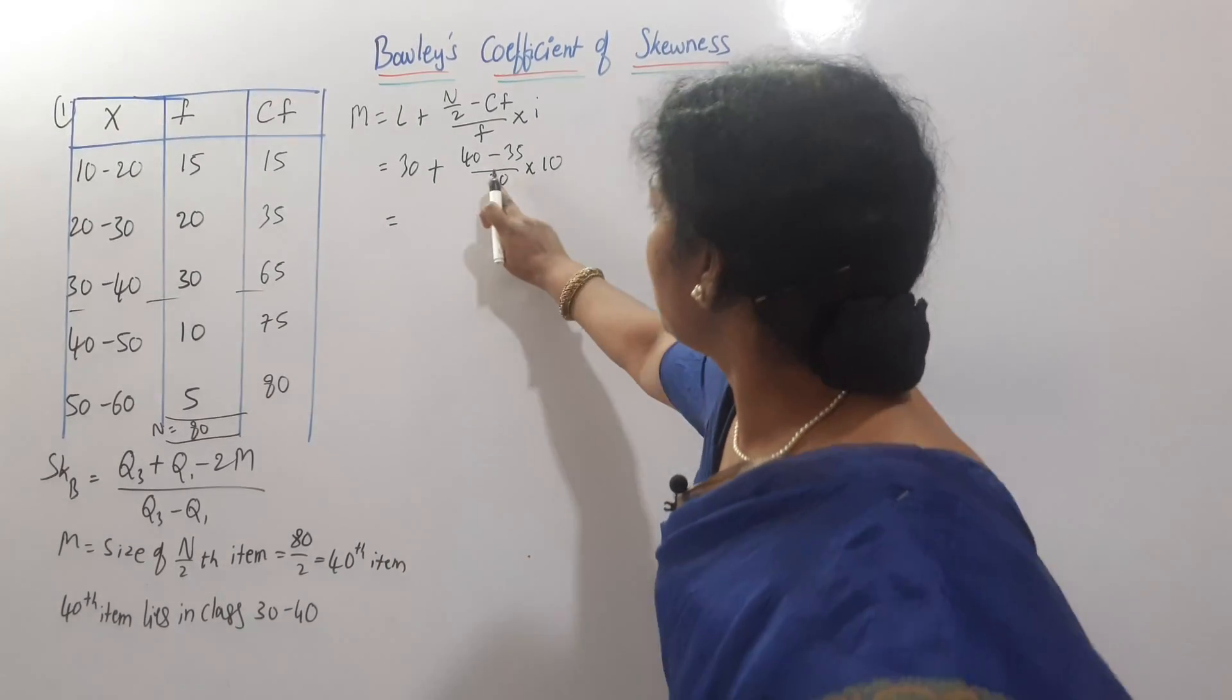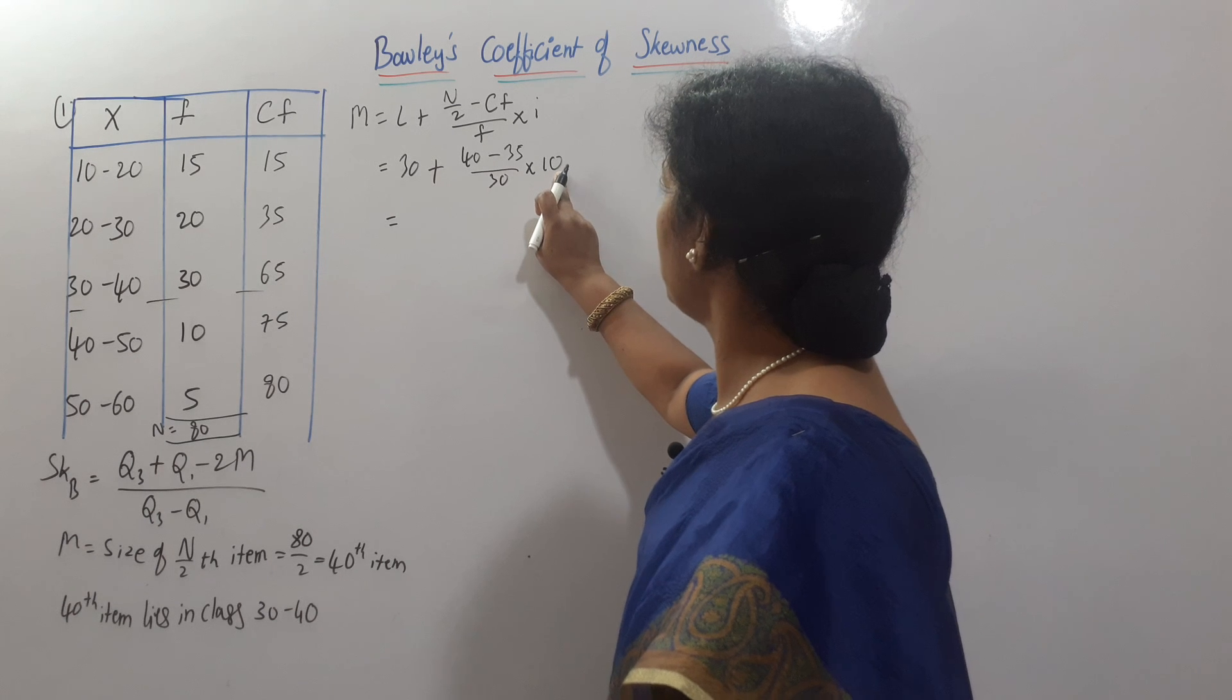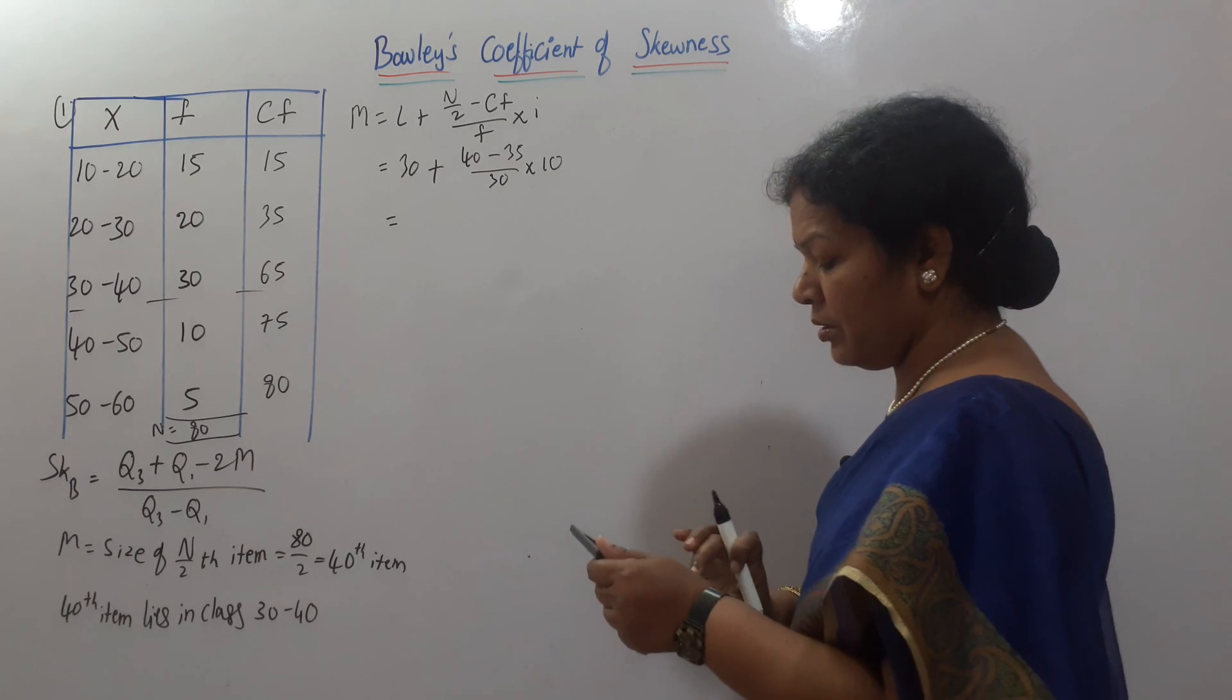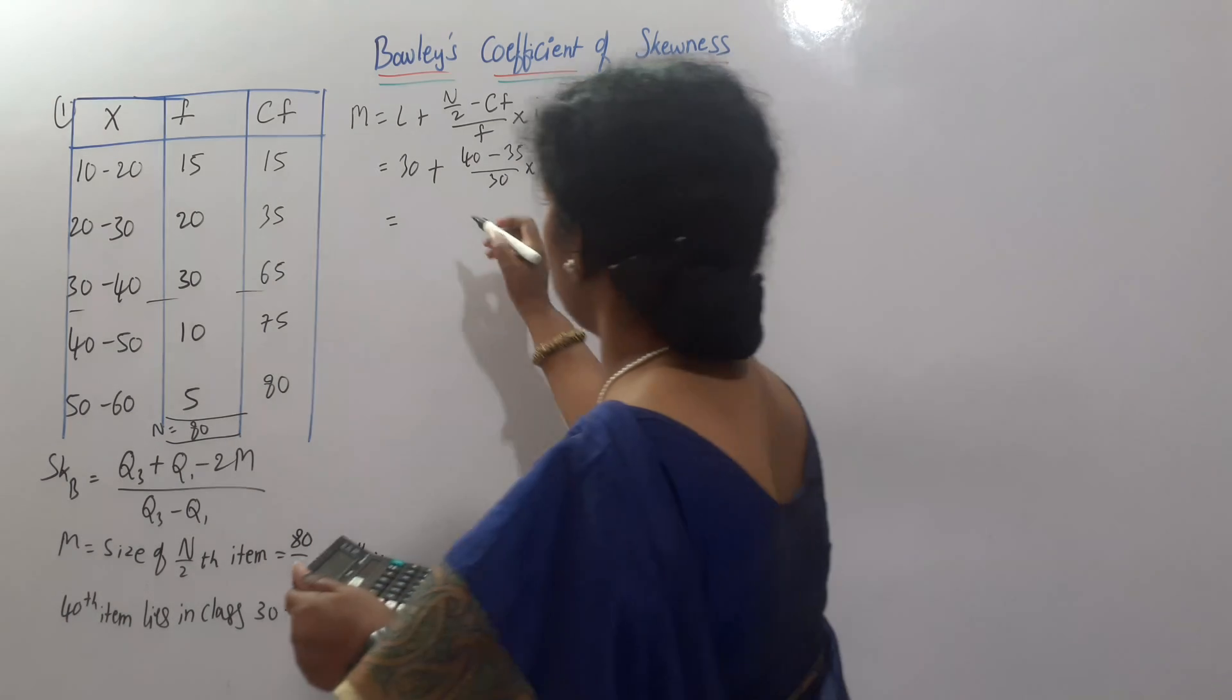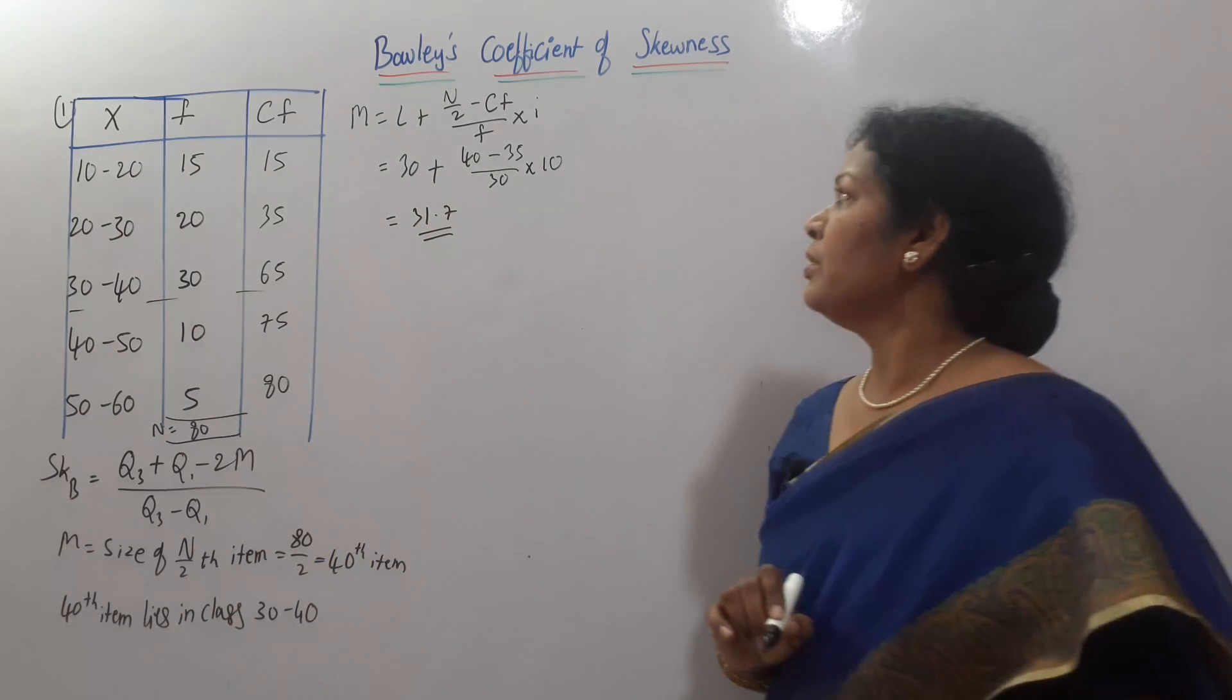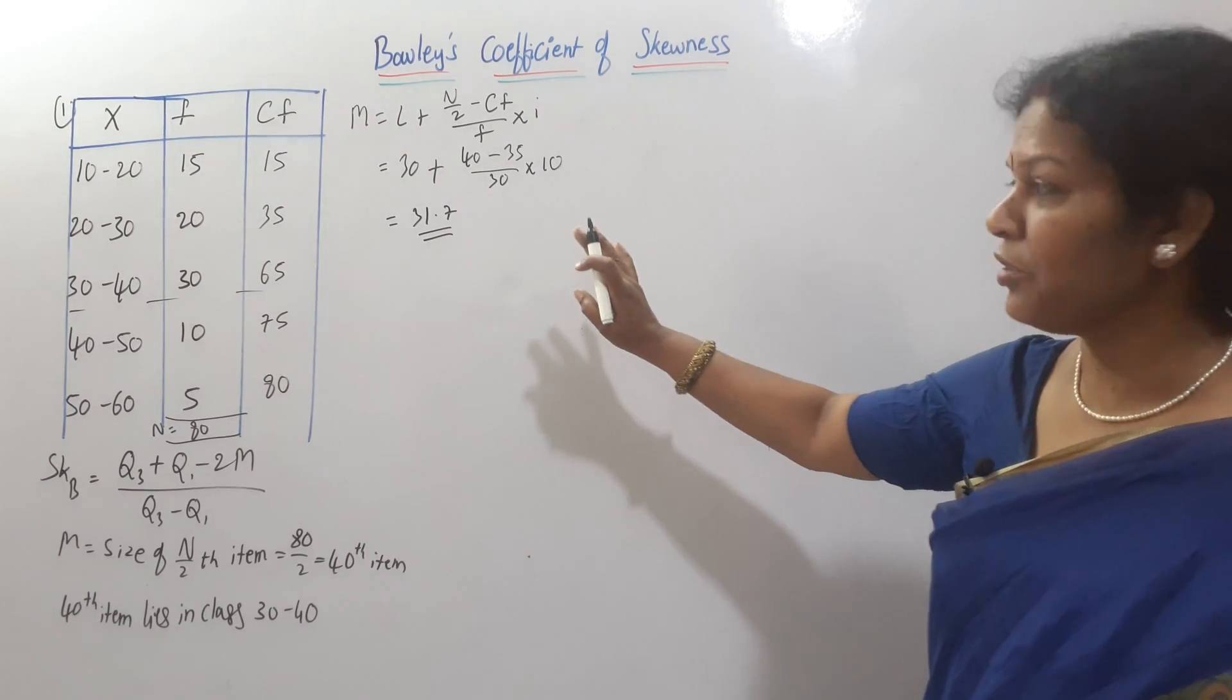Shall we do the calculations? 40 minus 35 is 5. 5 into 10 is 50. 50 divided by 30 comes to 1.66, means 31.66, means we can say 31.7. M is 31.7. I have done simplified the calculations.